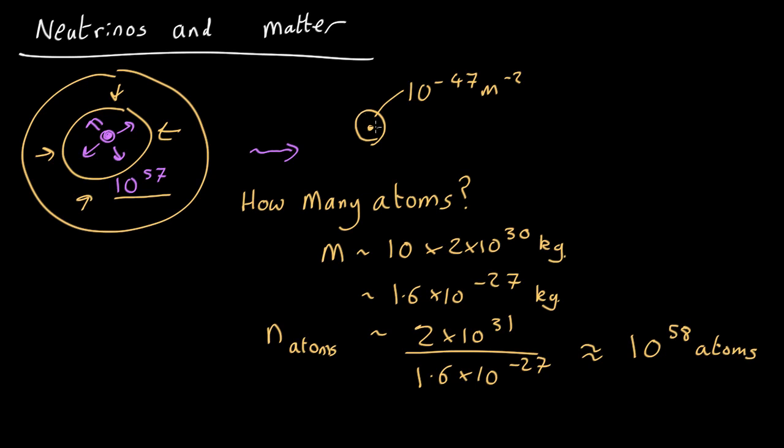So if each atom has a cross-sectional area of 10 to the minus 47, the total cross-sectional area is just 10 to the 58 times 10 to the minus 47, which is about 10 to the 11 square meters. So that's a pretty big cross-sectional area.